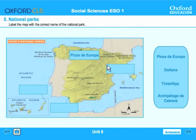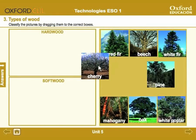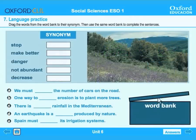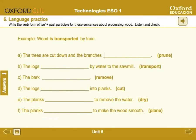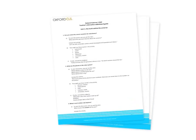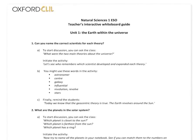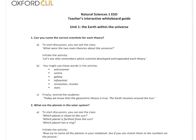Make subject content engaging and encourage active participation. Every unit features guided language practice activities to help students consolidate their English skills, all within the context of the subject content. An accompanying teacher's guide provides suggestions for how to deliver the activities in the classroom, including prompts for initiating discussion and key vocabulary.